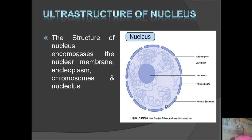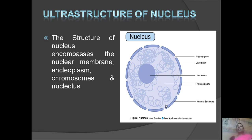Nucleus is called the ultra structure. The nucleus is the center. The main function is the main function. The character is stored in the nucleus. The dark circle is called the nucleolus.